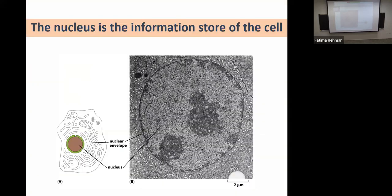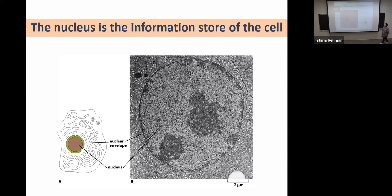We started off with the nucleus as the center holding all our information. A key difference between typical membranes and the nuclear membrane is that the nuclear membrane is a double bilayer. We'll talk about how that happens over evolutionary time, but it houses the DNA inside it.